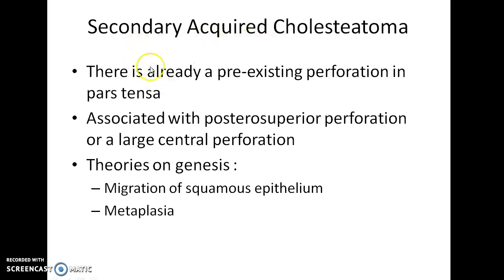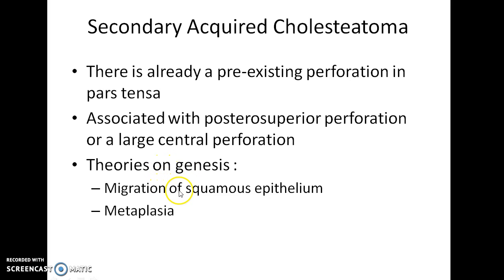Secondary acquired cholesteatoma: in this, there is already a pre-existing perforation in pars tensa. It is associated with posterosuperior perforation or a large central perforation. Theories on its genesis include migration of squamous epithelium and metaplasia.